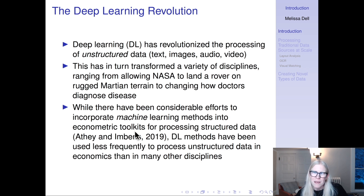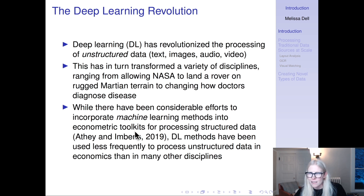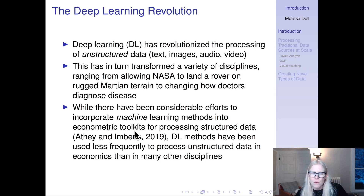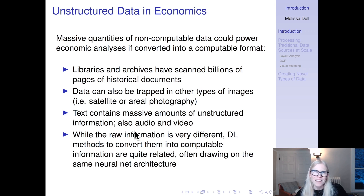This is also not a course about econometrics. We'll talk a little bit about inference, but by and large in this entire literature, you will not see a standard error. What it's really about is taking information — a text, a picture, a video, a satellite image — which in its raw format you cannot use in your analyses, and encoding that into something suitable for whatever downstream task or analysis you might want to perform. There are massive quantities of non-computable data that could power economic analyses if converted into a computable format.